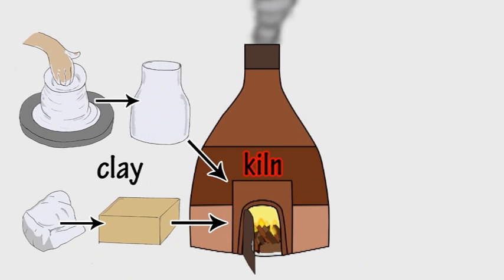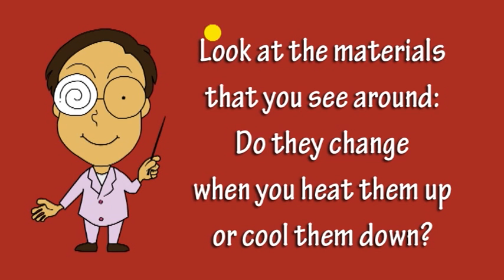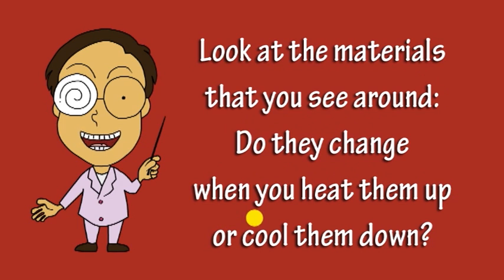If you put some clay into a kiln that's very hot, it can turn into a brick or a flower pot. Look at the materials that you see around — do they change when you heat them up or cool them down?